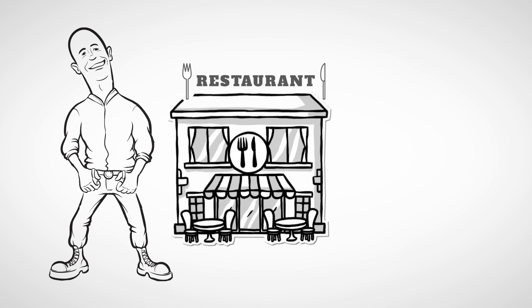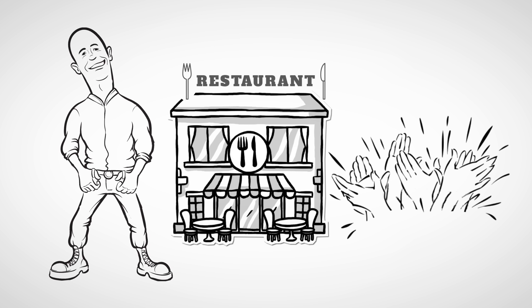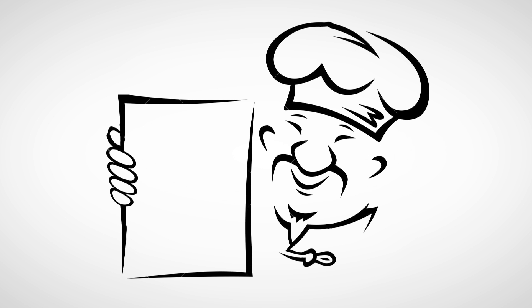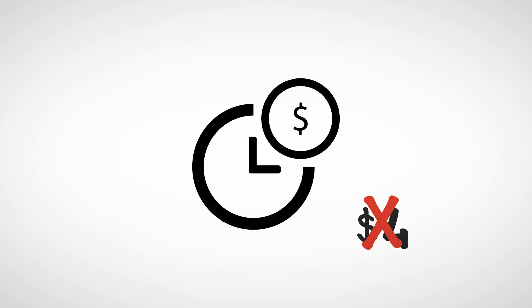This is Mansoor. He owns a seafood restaurant, and it is very successful. It's been running quite well for several years now and he is loved by all of his customers. However, the economy has been experiencing sharp and rising inflation for the past several months. Each time he produces a menu, he needs to change it the following week. This situation is called menu cost, and it doesn't just hurt restaurants, but any business that has to spend time and money constantly updating their prices.